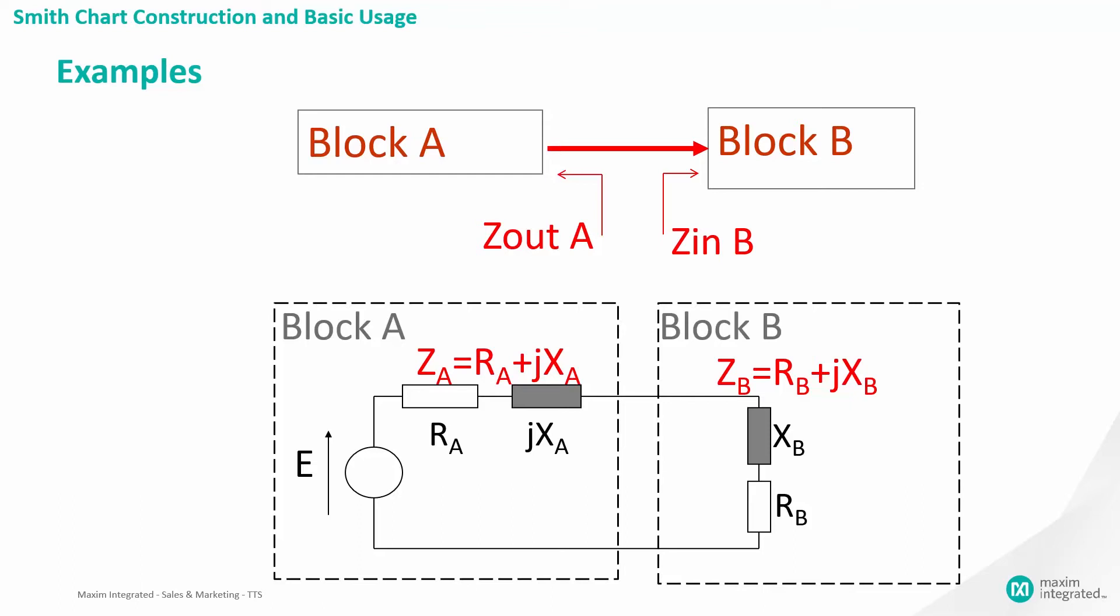Blocks A and B can be any dipole structure. For example, an amplifier input, filter output, twisted pair, or coaxial cable. We are interested in the portion of the reflected wave gamma at the boundary between the two blocks.